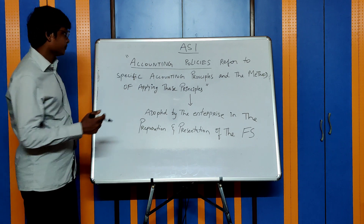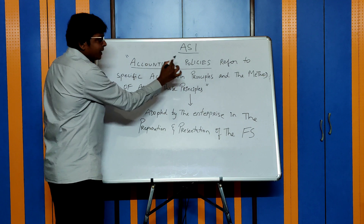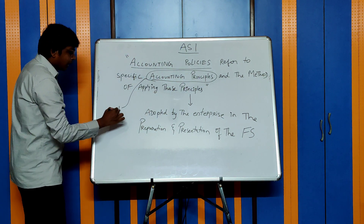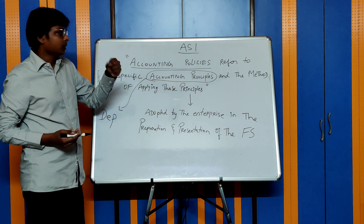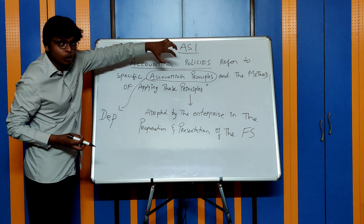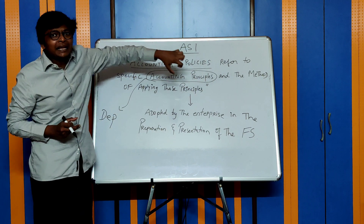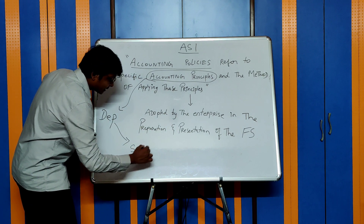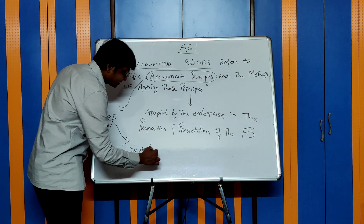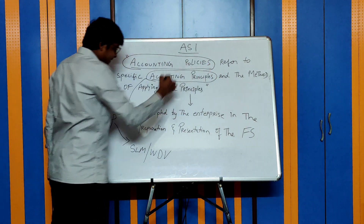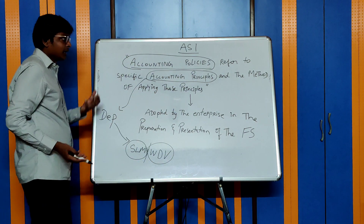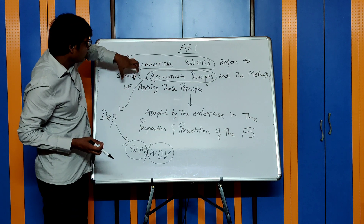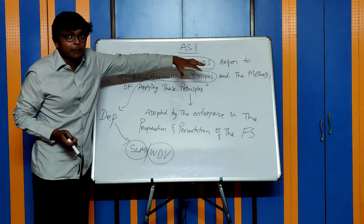Let us take an example to understand this. Depreciation is an accounting principle. Accounting policies refer to specific accounting principles — depreciation — and the method of applying those principles. How do you apply depreciation? You apply depreciation in your books of accounts either by using straight line method (SLM) or diminishing balance method, also known as WDV method. So accounting policies can be SLM or WDV.